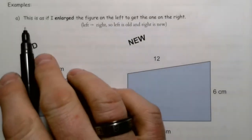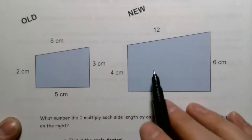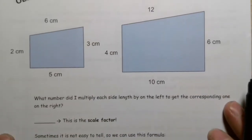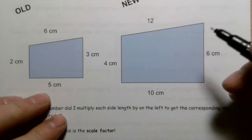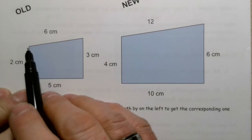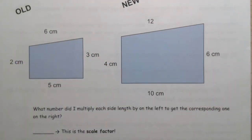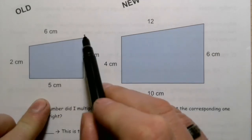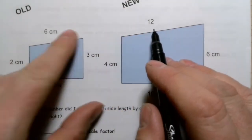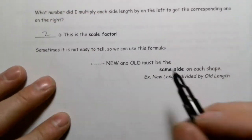Let's look at another question. The figure on the left was enlarged to get the one on the right — old to new. The question is: what number was each side length multiplied by? The shape is a trapezoidal sort of shape, so it's easy to compare the slanted side. The old length is six and the new length is twelve, so the scale factor is two.